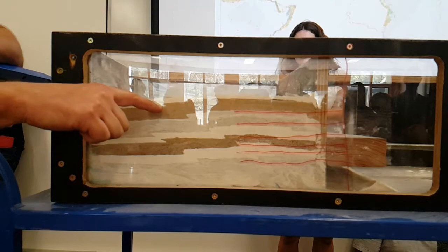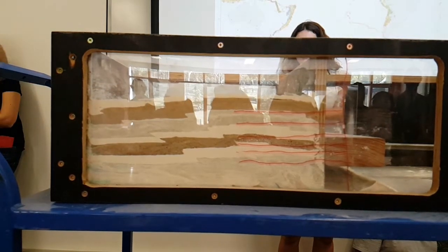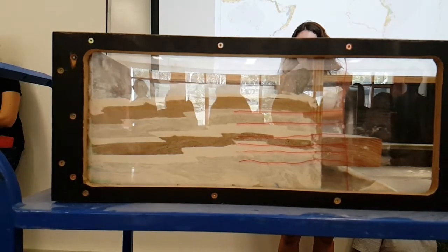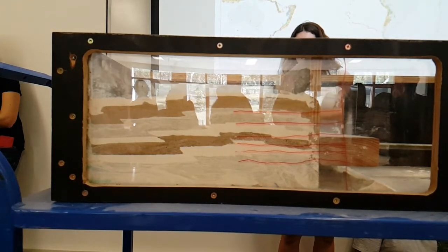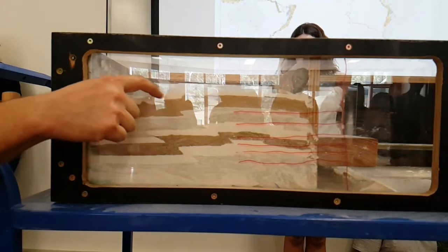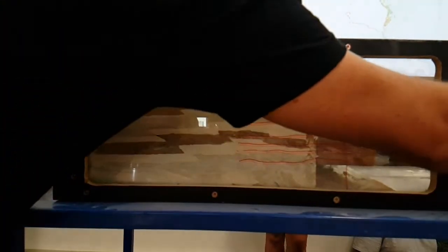You can just start seeing some of these reverse faults starting to form as we're thickening this crust up. Here we've got a fault basically moving the hanging wall upwards, moving this side upwards. I'll just draw on that.